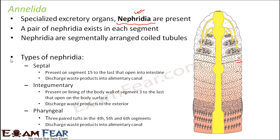There are three types of nephridia present in an earthworm: septal nephridia, integumentary nephridia, and pharyngeal nephridia. Septal nephridia are present from segment 15 to the last, opening into the intestine. Starting from the 15th segment to the last, these are the septal nephridia, and they discharge the waste materials into the alimentary canal.